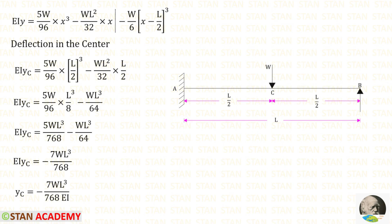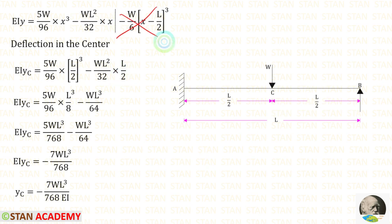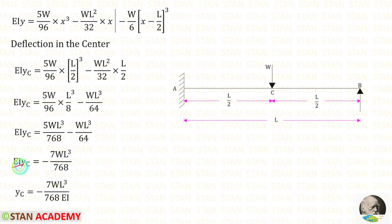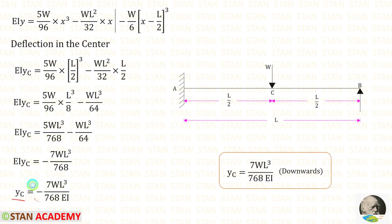Now let us take the deflection equation and find the deflection at the center. At the center, x equals L/2. We do not consider the Macaulay bracket term. (L/2)³ gives L³/8; multiplying gives 768 in the denominator. Using the calculator, subtracting 1/64 from 5/768 gives minus 7/768. Taking EI to the other side in the denominator, the deflection at center C is negative, meaning it is a downward deflection.